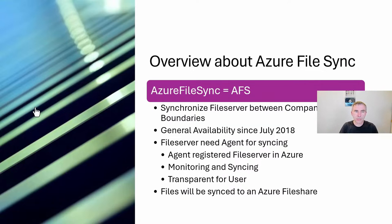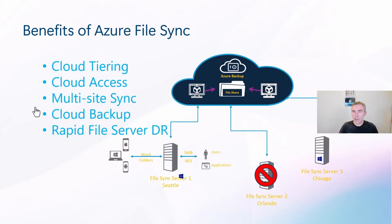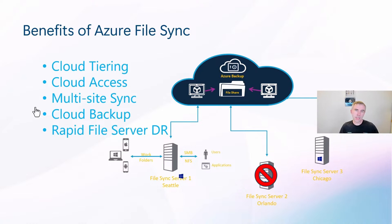Why can this be helpful? First, for cloud access and multi-site synchronization — think about when you have different sites that you want synchronized. You can also use cloud tiering. What cloud tiering does is it keeps only the hottest files on the local server — the files used by employees at that branch location. The older, less-used files will be stored only in the Azure File Share solution.